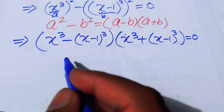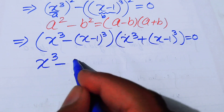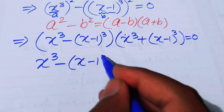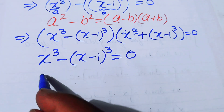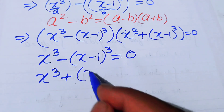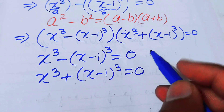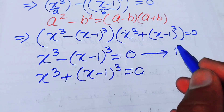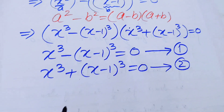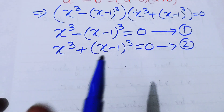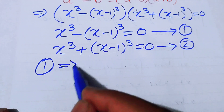After this step we convert into two cases. Case 1 (equation 1): x³ minus (x−1)³ equals 0. Case 2 (equation 2): x³ plus (x−1)³ equals 0.